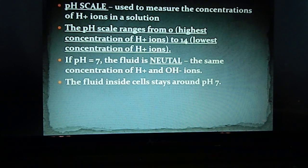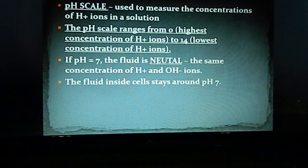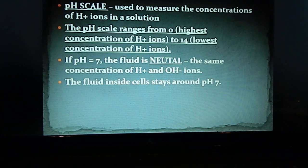In the middle is pH seven, which means the fluid is neutral — it has the same concentration of hydrogen ions and hydroxide ions. Most of the water inside and outside of cells is around pH seven.